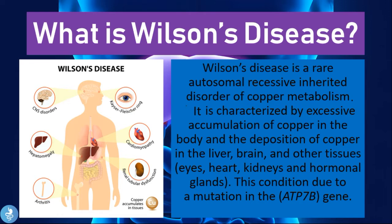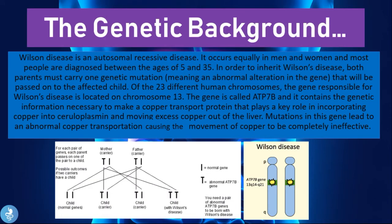Looking at the genetic background, Wilson's disease is an autosomal recessive disease. It occurs equally in men and women, and most people are diagnosed between the ages of 5 and 35. Both parents must carry at least one genetic mutation. The responsible gene is located on chromosome 13, called ATP7B, and it contains information necessary to make a copper transport protein that incorporates copper into cellular plasma and moves excess copper out of the liver.